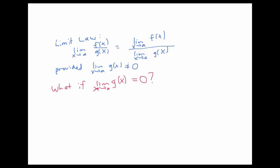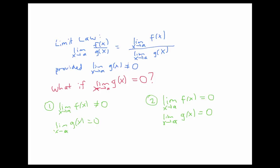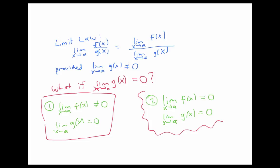There are two different situations we'll want to consider. It could be that even though the limit on the denominator is equal to zero, the limit on the numerator exists and is not equal to zero. Or it could happen that both limits are zero. We'll focus on the first situation first, starting with an example, and we'll look at the second situation later on.